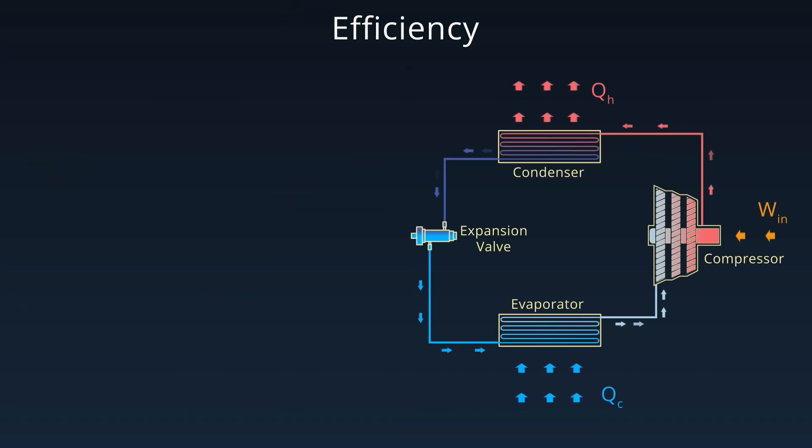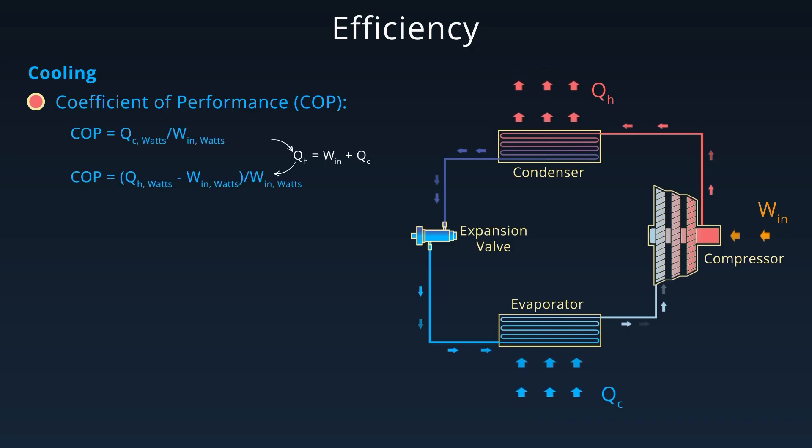Let's look at how we measure the efficiency of the vapor compression cycle. The coefficient of performance or COP is a key metric. For cooling, it is defined as the amount of heat removed from the low temperature environment divided by the work input to the compressor.